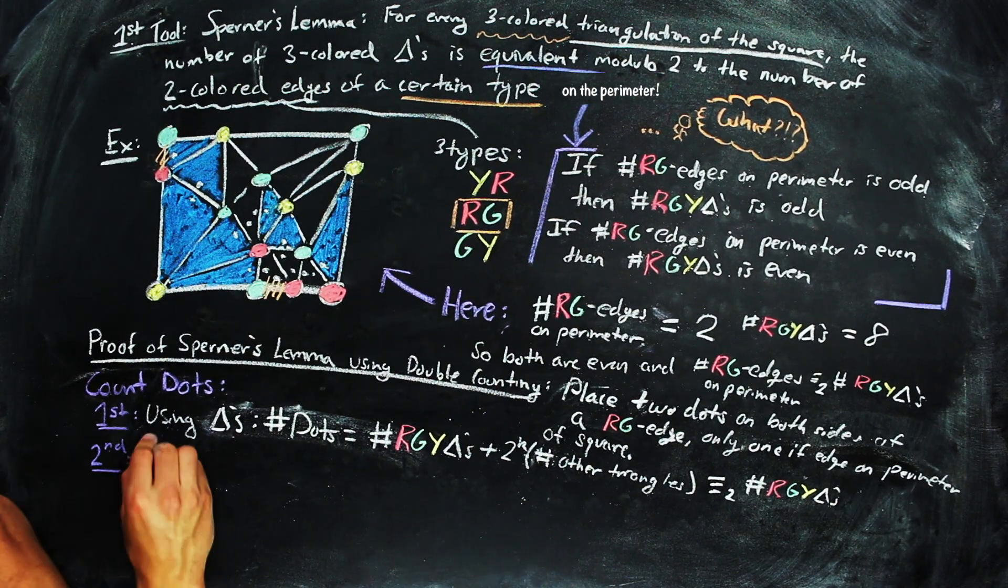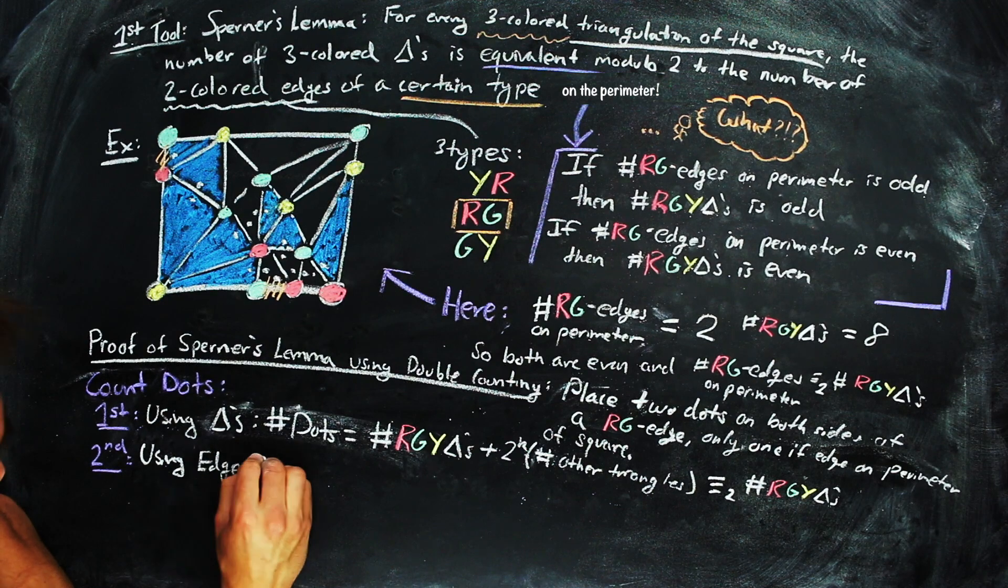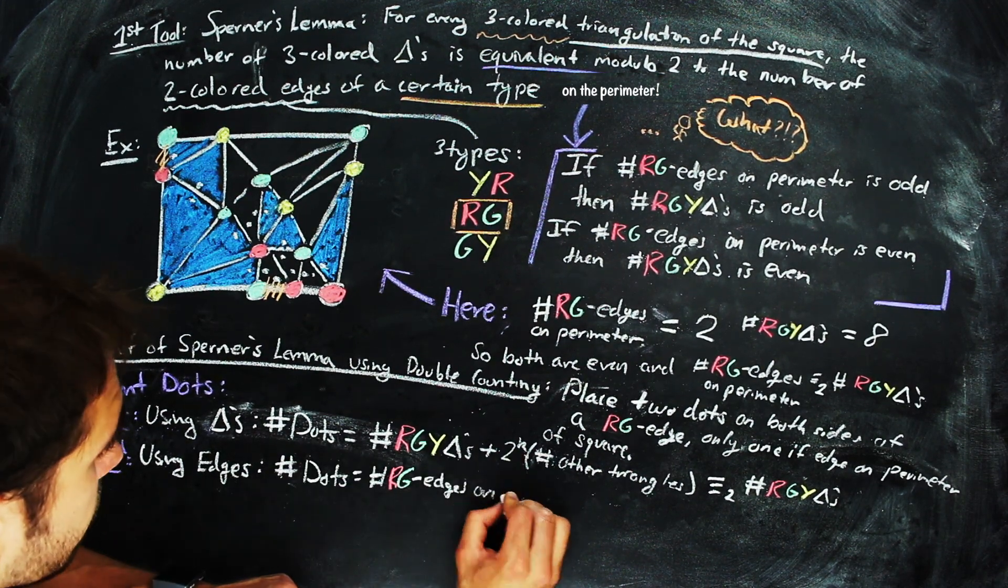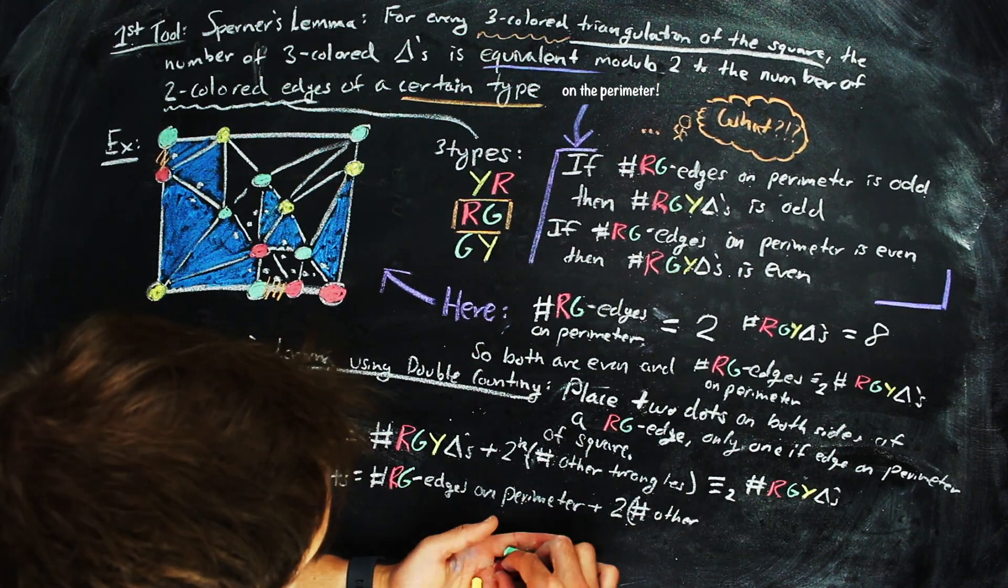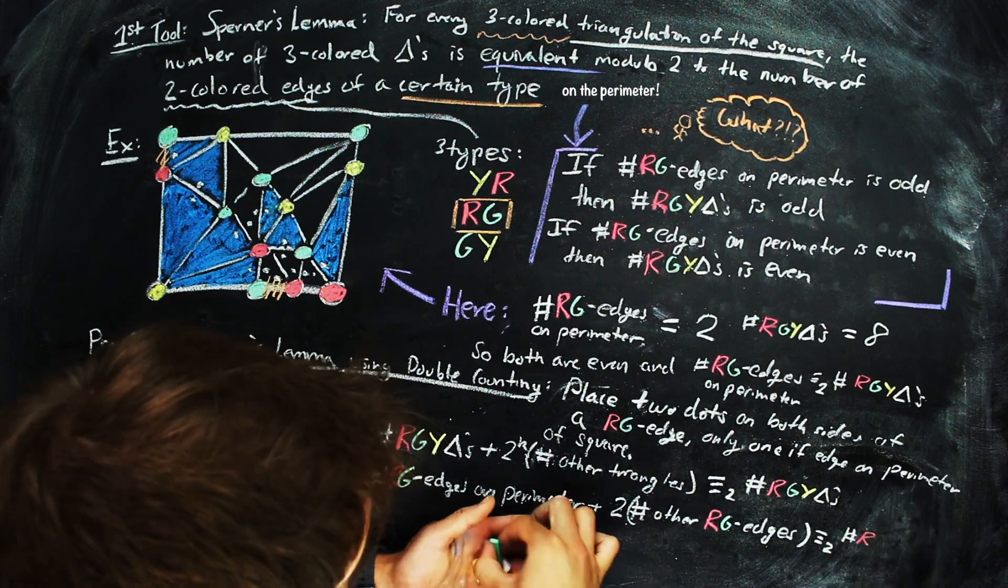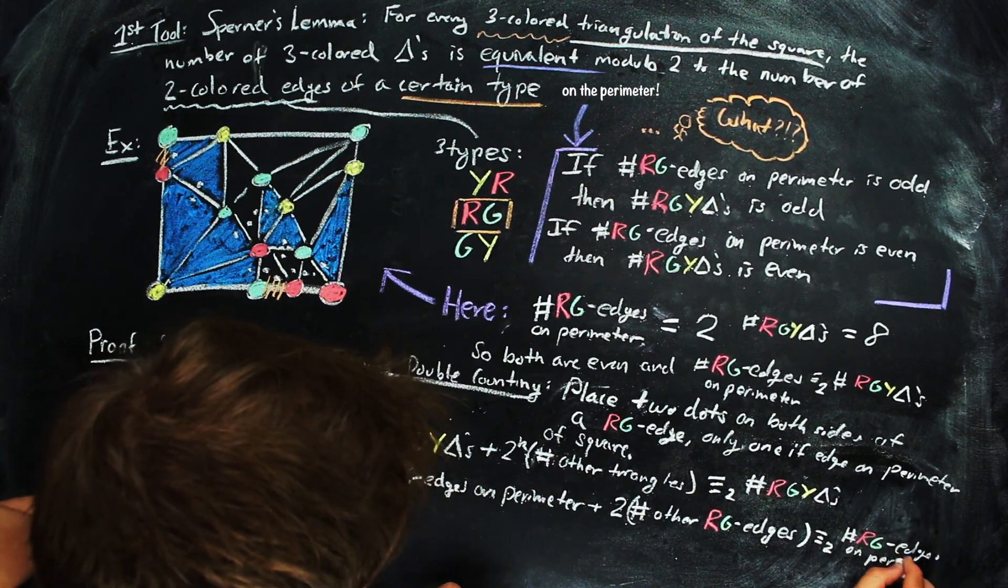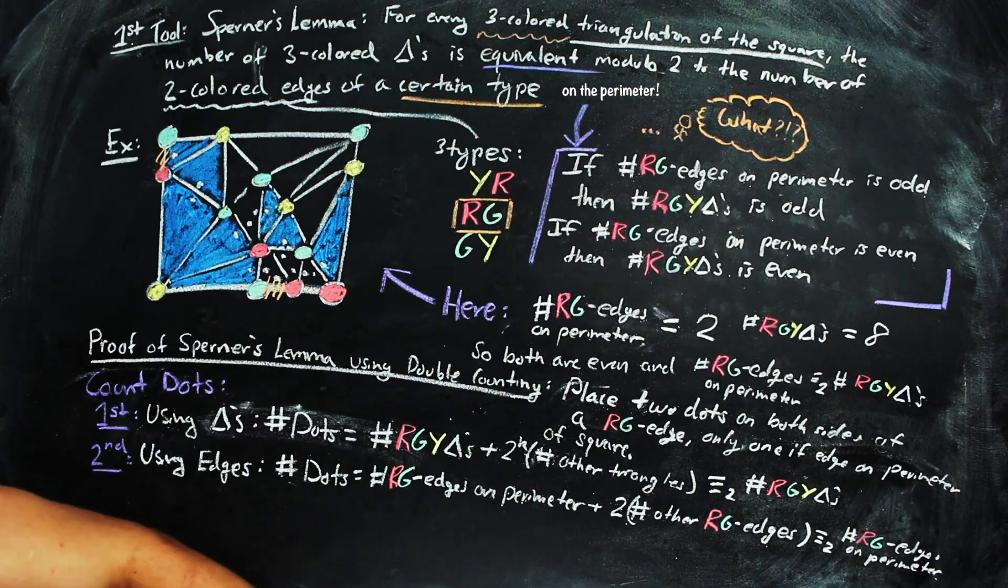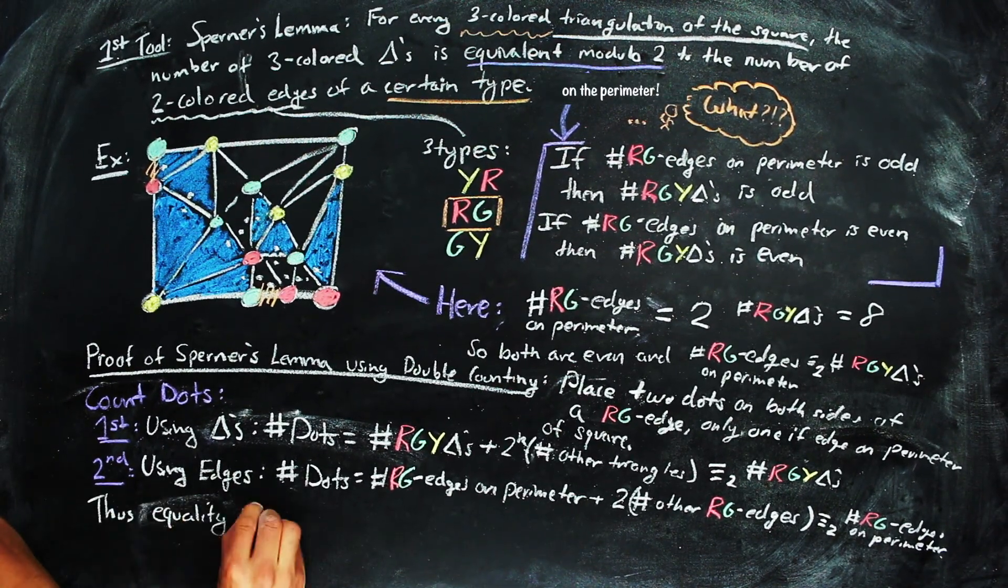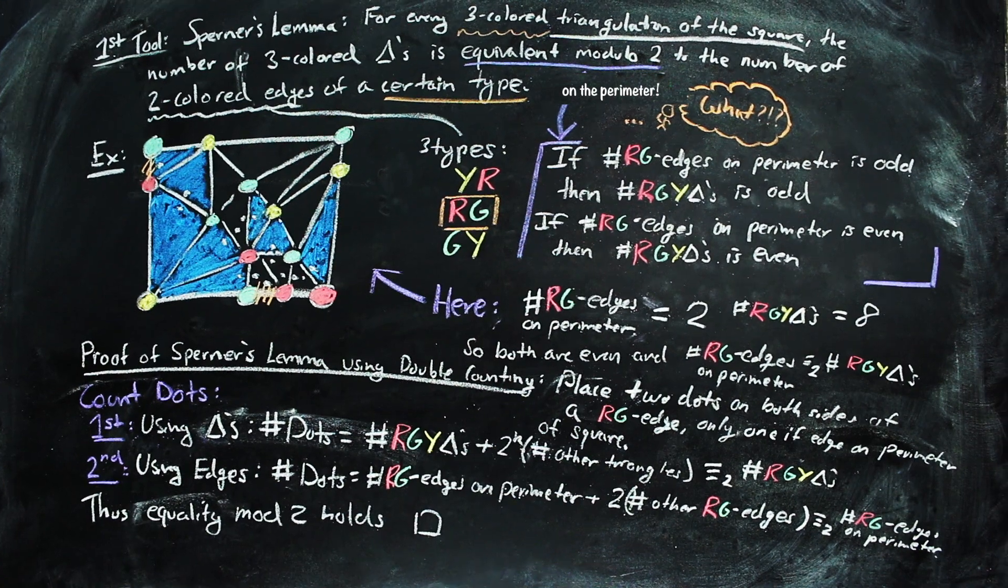Now, using edges, we count again. On a red-green edge, we have one dot, if it is on the perimeter, but then for all other edges in the triangulation, we have either zero or two dots. So, modulo 2, the number of dots is just the number of red-green colored edges on the perimeter. Thus, the number of three-colored triangles and the number of red-green colored edges is equal modulo 2, and we have proven the lemma.